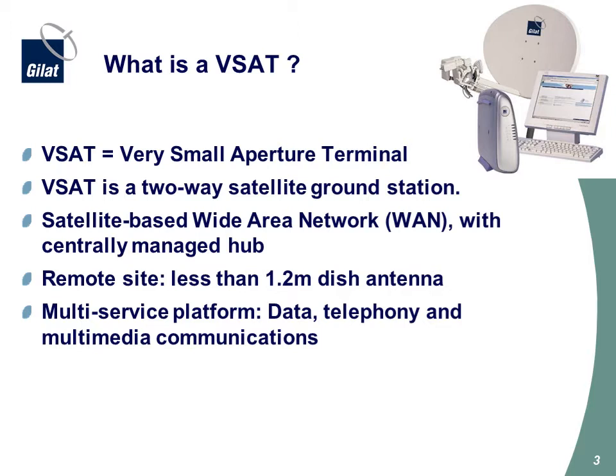VSAT is a two-way satellite ground station, capable of transmitting signals and also receiving signals from a satellite. Some VSATs are one-way — they only receive signals from the satellite — but most VSATs are two-way satellite ground stations.